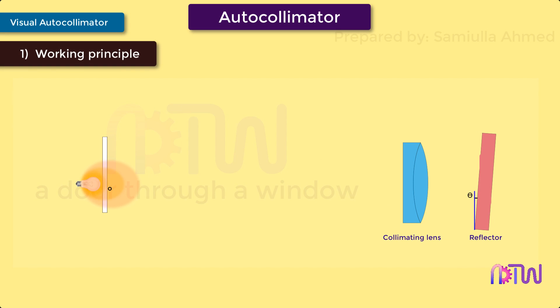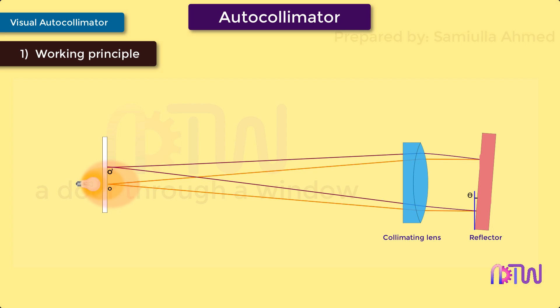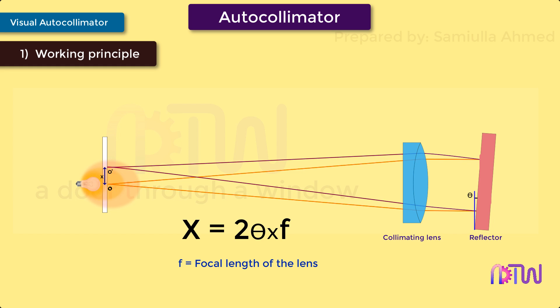If the reflector or surface is at an angle theta, the incident rays are reflected at angle 2 theta, and the reflected rays fall at point O dash. By knowing the distance between O and O dash, which can be denoted by X, we can find out the angle theta using the relationship: X = 2 × theta × F, where F is the focal length of the objective lens. This is the working principle behind the autocollimator.